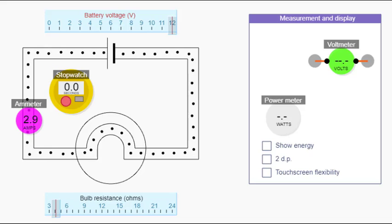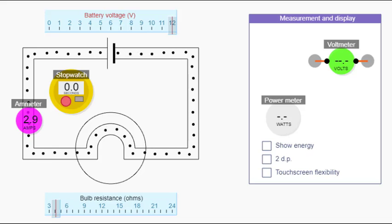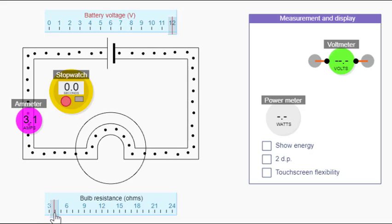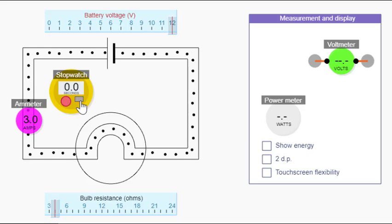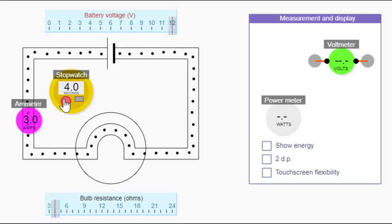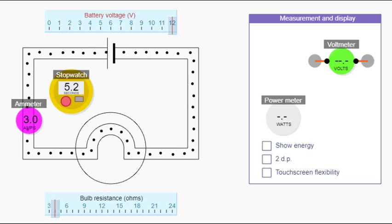Let's check by counting the charges again. One, two, three, four, five, six, seven, eight, nine, ten, eleven, twelve, thirteen, fourteen, fifteen. There we go — pretty good!